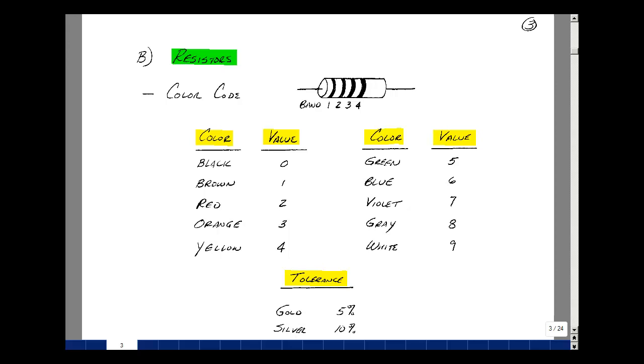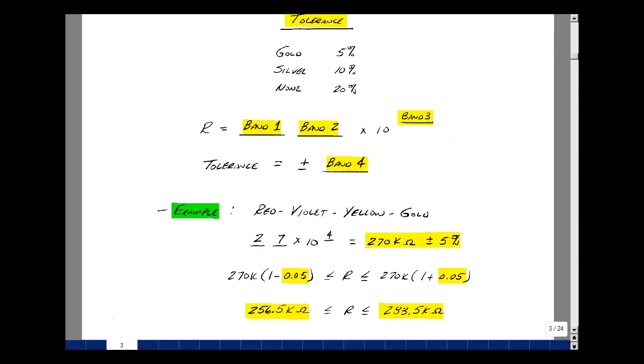Let me show you how to calculate the resistance based on these colors through an example. So the first band is a placeholder, the second band is a placeholder, and the third band is the power of ten. Of course, our fourth band was our tolerance.